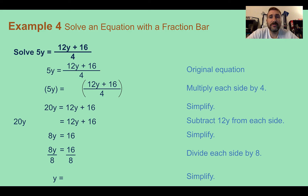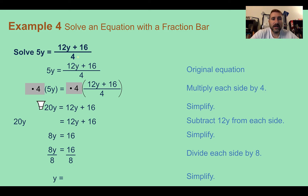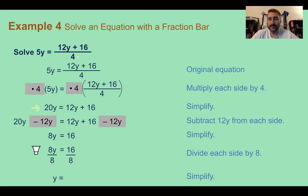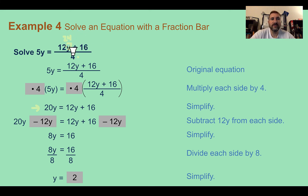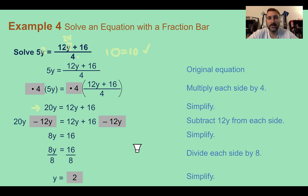Example 4: solve an equation with a fraction bar. If we see a complex fraction, to get rid of it we multiply by the denominator. Multiplying both sides by 4, we get 20y equals 12y plus 16. We don't need to distribute, so we subtract 12y from both sides. Simplifying, we get 8y equals 16, then dividing both sides by 8, y equals 2. Checking: 12 times 2 is 24, 24 plus 16 is 40, 40 divided by 4 is 10. Plugging in 2 on the other side, 5 times 2 is 10. Ten equals 10 — we are good.